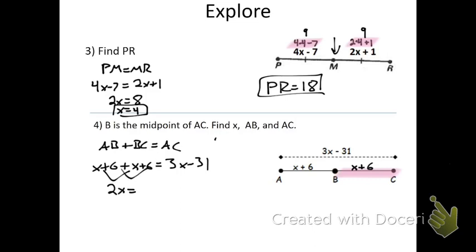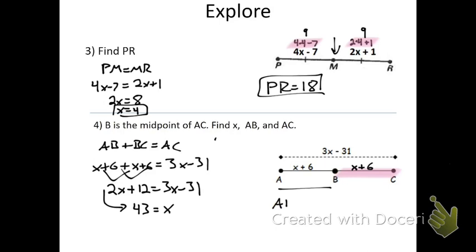Combining like terms gives 2X plus 12 equals 3X minus 31. Subtracting 2X from each side and adding 31 to each side, we end up with X equals 43. So if X equals 43, substituting back in: AB equals X plus 6, and since X is 43, AB has a length of 49.